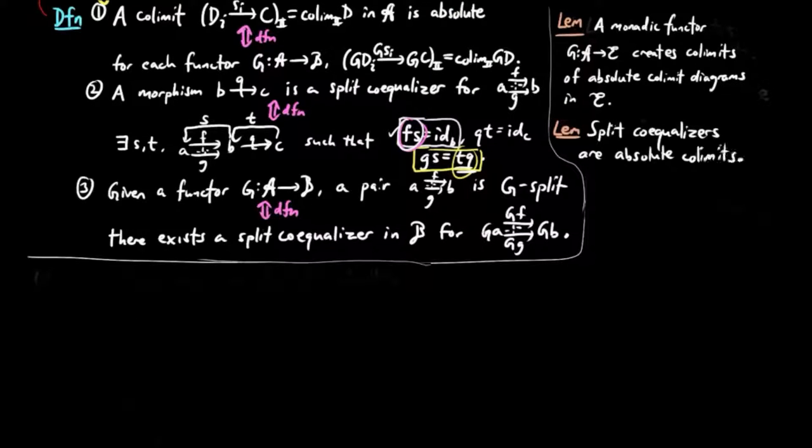So now as a corollary to the lemmas above, we have a monadic functor G creates co-equalizers of G-split pairs, since a G-split pair is taken to an absolute co-limit by the functor G. Now we come to the main result.